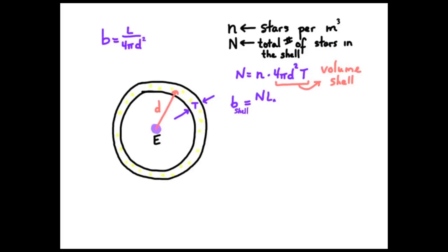So we're going to work out the combined brightness of all the stars in that shell. If the luminosity, the average luminosity is given by L average, then the brightness of the shell is capital N times L average over 4 pi d squared. And so we can simplify that. And so the brightness of the shell is small n times t times the average luminosity.